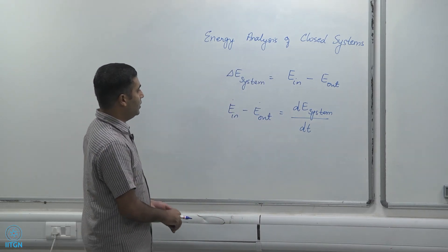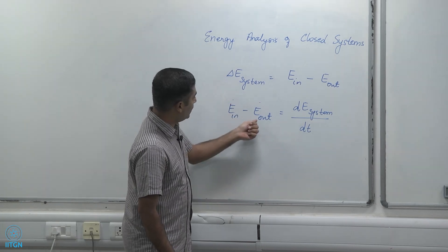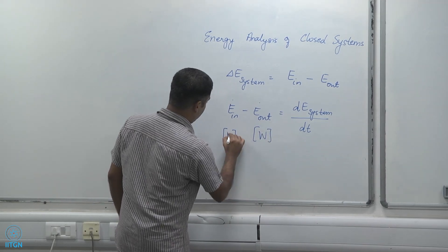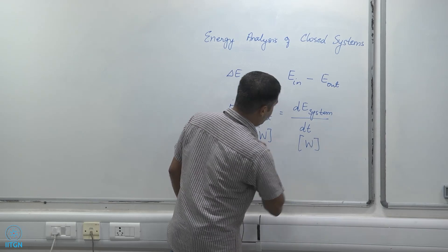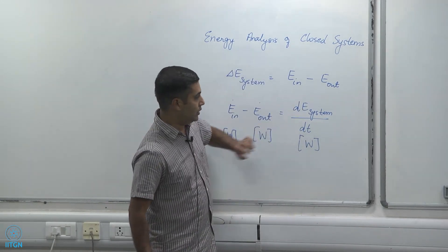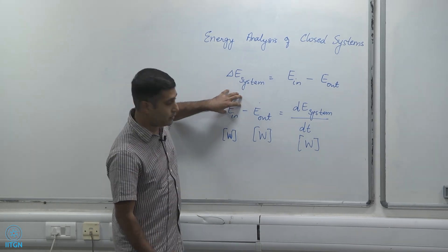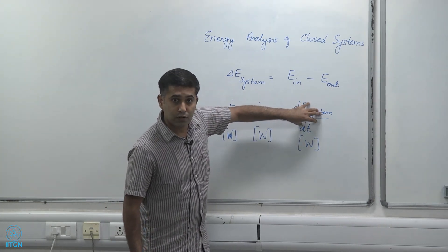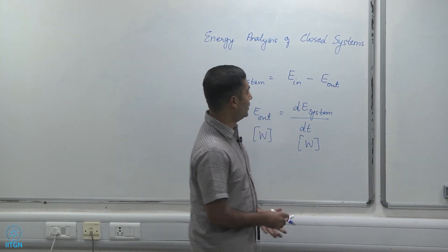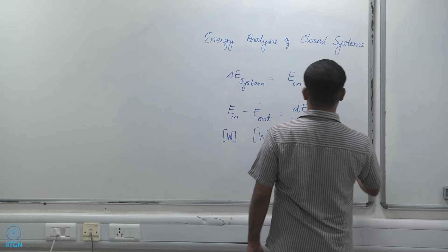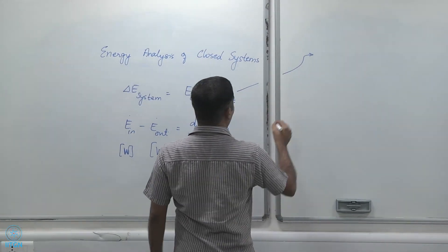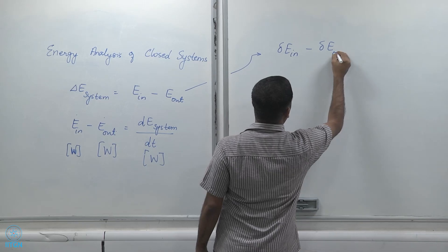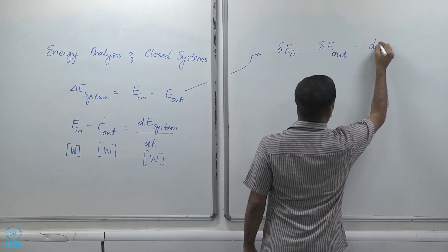As I explained in the earlier video, the rate terms are written with a dot notation and have units of Watts, while the differential form dE_system/dt is written as a differential. E_dot_in is the rate of energy entering the system, E_dot_out is the rate of energy exiting the system, and dE_system/dt is the rate of change of energy of the system. That is the reason we write them differently. I can also write this as delta E_in minus delta E_out equals dE_system.